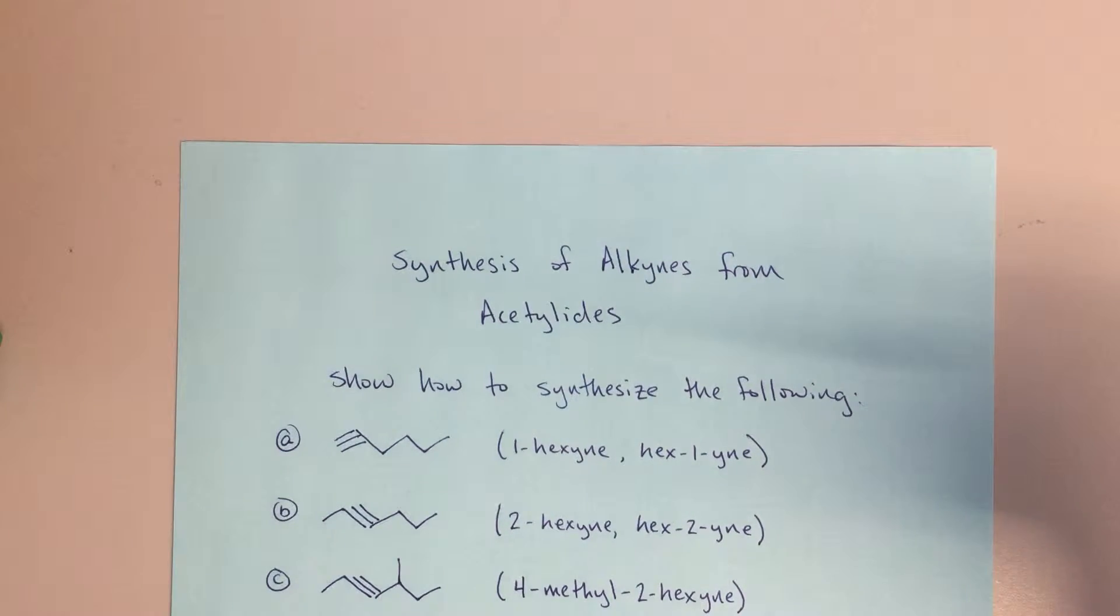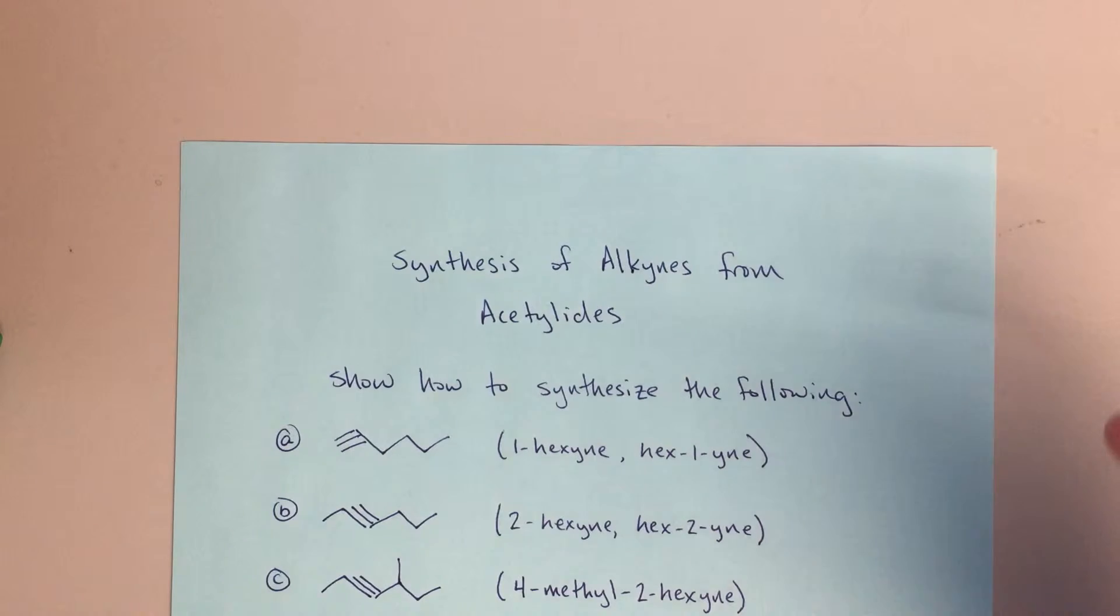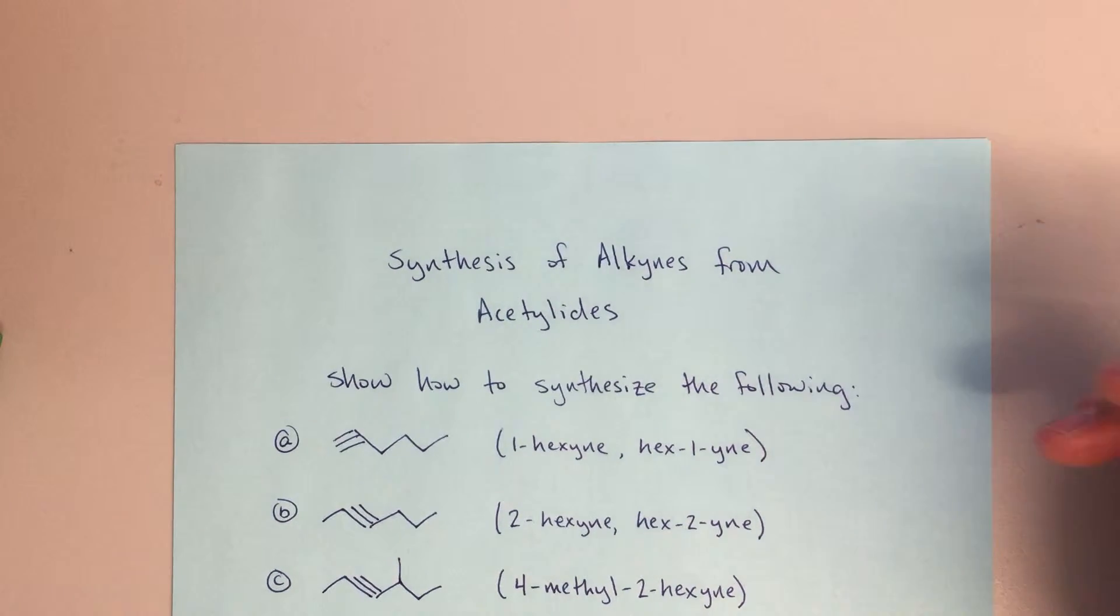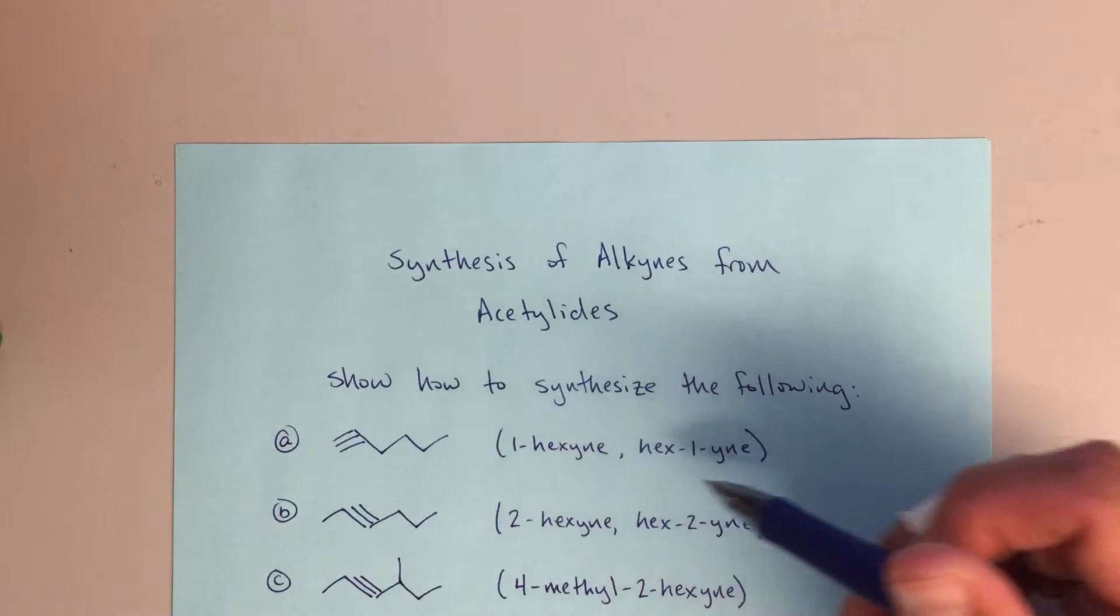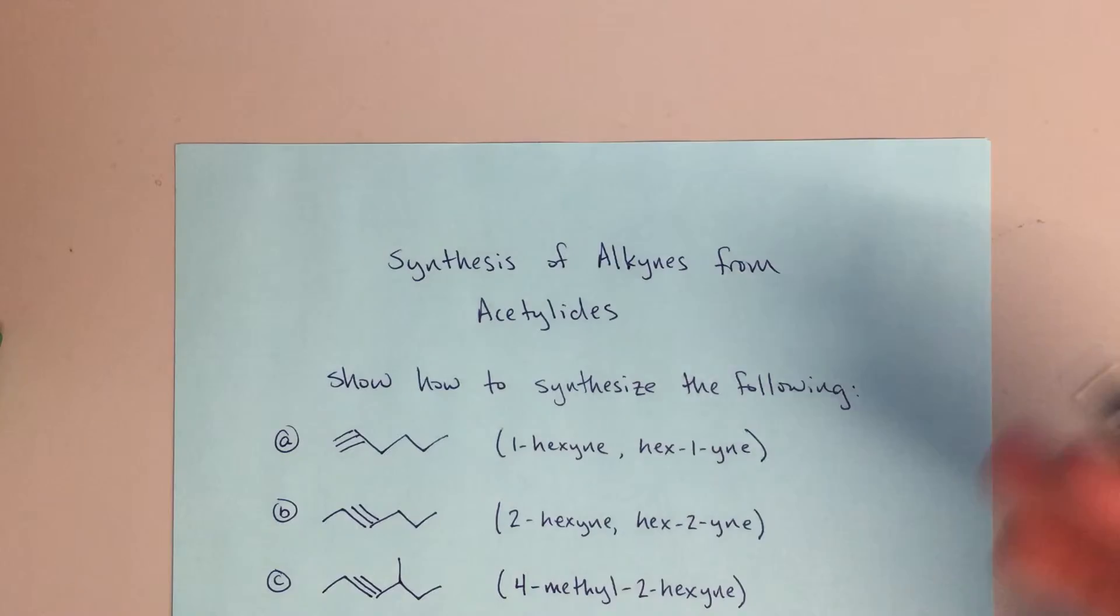This video is going to cover how we might synthesize alkynes from acetylides. Acetylides are those ions that we form from acetylene and sodium amide. The question we're going to illustrate these points with asks: show how to synthesize the following: 1-hexyne, 2-hexyne, and 4-methyl-2-hexyne if possible using this method.